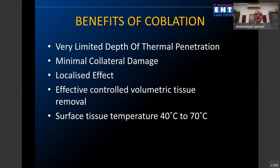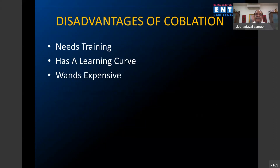The benefits of co-ablation include: very limited depth of thermal penetration, minimal collateral damage, localized effect, and effective controlled volumetric tissue removal. Temperatures are between 40 to 70 degrees. Healing occurs with very minimal fibrosis, unlike with diathermy. The disadvantages are a learning curve for training and the wands being somewhat expensive.